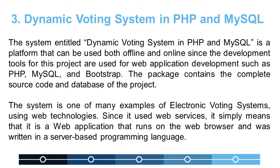The system entitled Dynamic Voting System in PHP and MySQL is a platform that can be used both offline and online, since the development tools used for this project are web application technologies such as PHP, MySQL, and Bootstrap. The package contains the complete source code and database of the project. The system is one of many examples of electronic voting systems using web technologies. Since it uses web services, it is a web application that runs on the web browser and was written in a server-based programming language.